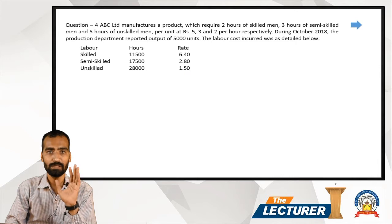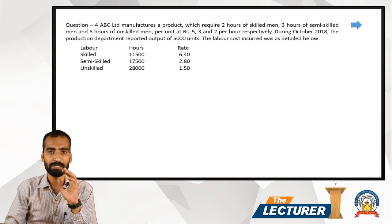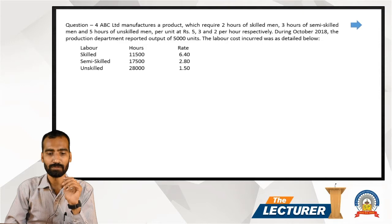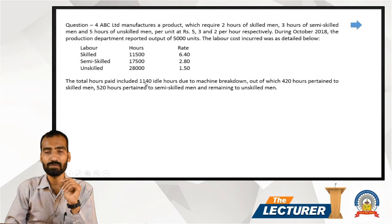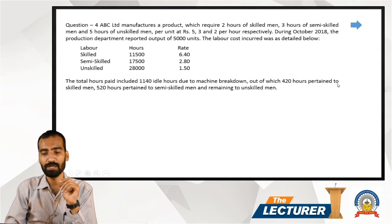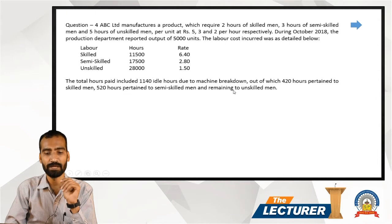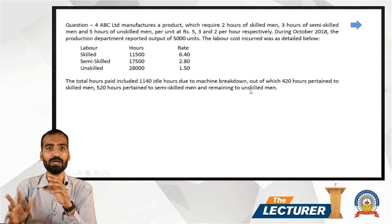The total hours paid included 1,140 idle hours due to machine breakdown. Of these, 420 hours pertain to skilled men, 520 hours to semi-skilled men, and the remaining 200 hours to unskilled men.